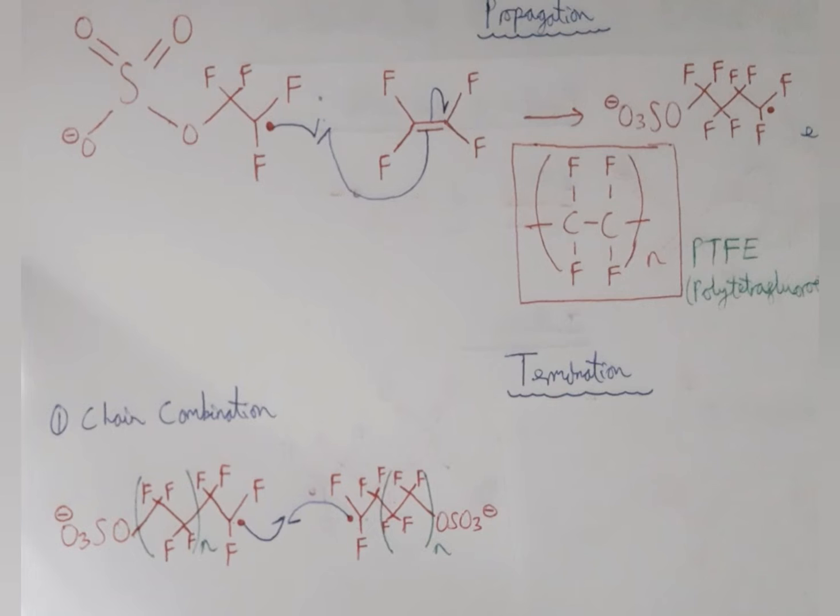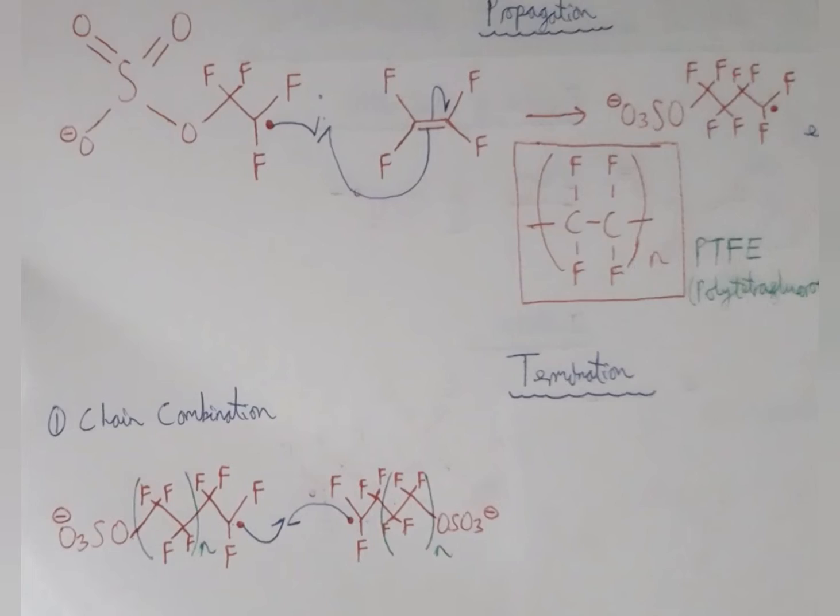For chain combination, basically what happens is two of the radicals just combine and then a bond forms between them. Two of the chains combine and they bond together, get a longer chain, and that basically stops the reaction.